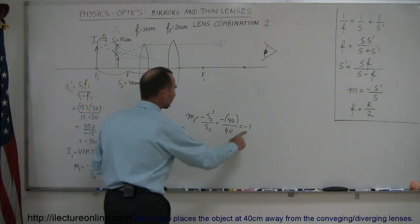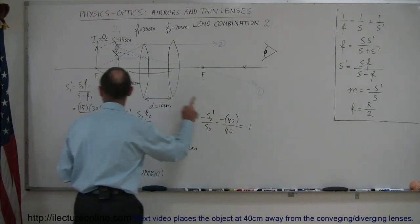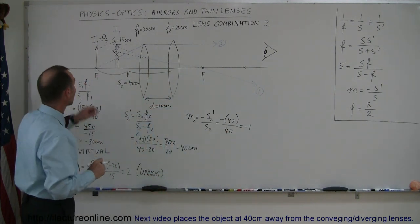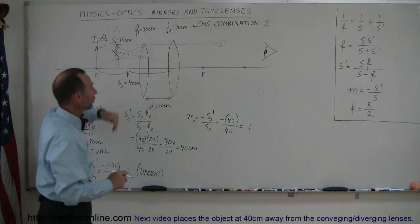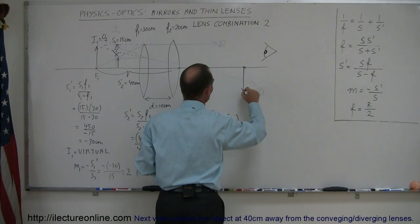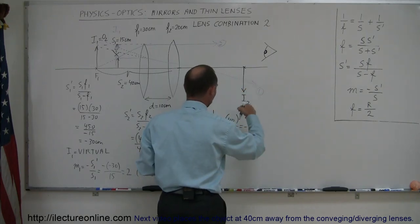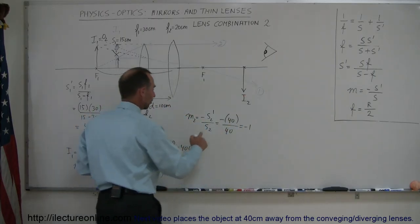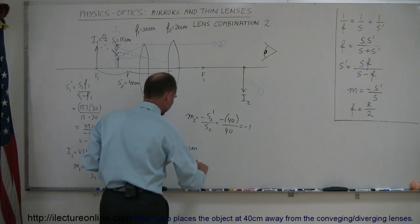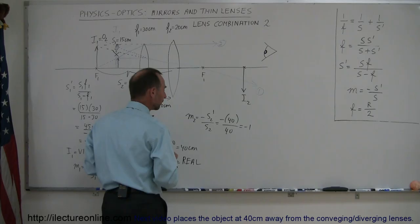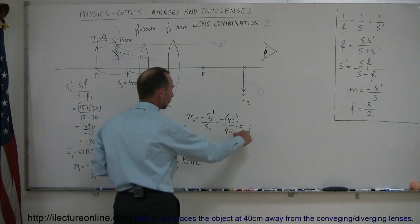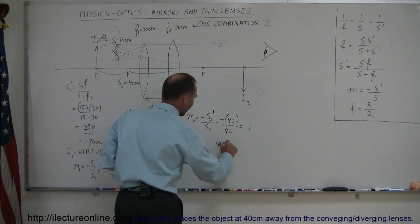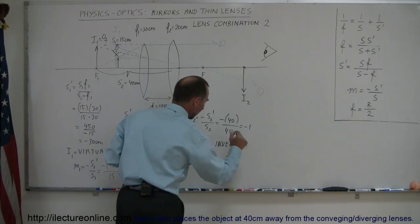That means the size of the second image is equal to the size of the first image, exactly the same, and the fact that it's negative here means that it's upside down relative to the first image, which is the second object, so it's inverted at this location, so here we go, so that would be image 2, and it's upside down, and is it a real image? It certainly is, because it's a positive image distance, so it's a real image. So I2 is real, and it has the same size as the first image, and it's upside down relative to the first image, so it's upside down or inverted.